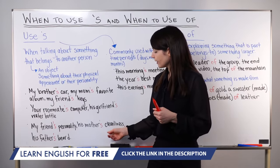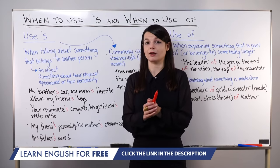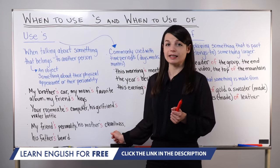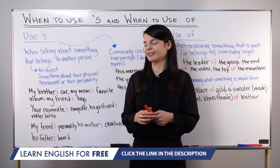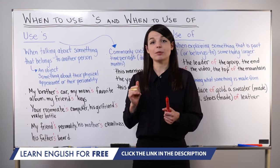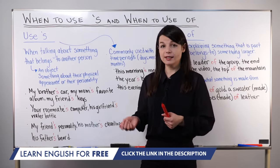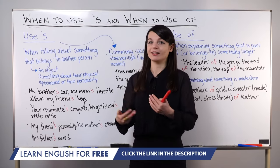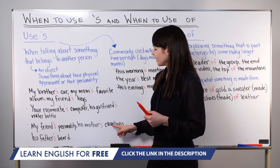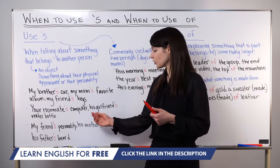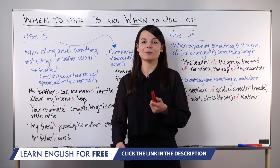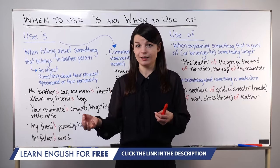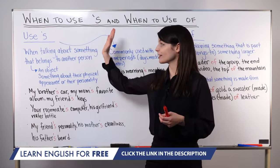Finally, let's look at some examples that talk about someone's personality or their characteristics: my friend's personality, or his mother's cleanliness, or his father's beard — that's a physical appearance point. In all of these example sentences, we continue to use apostrophe S to show ownership. So 'my friend's personality' means the personality belonging to my friend. We're using apostrophe S to show ownership of something, so please make sure to use it in situations such as these.